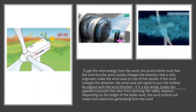To get more energy from the wind, the turbine has to face the wind. But since the wind often changes direction, engineers place a wind vane on top of the nacelle. If the wind changes direction, the wind vane signals the turbine to turn and align with the wind direction. If it is too windy, the brakes are applied to prevent the rotor from overspeeding for safety reasons. Depending on the length of the blades, the wind turbine will generate more electricity.